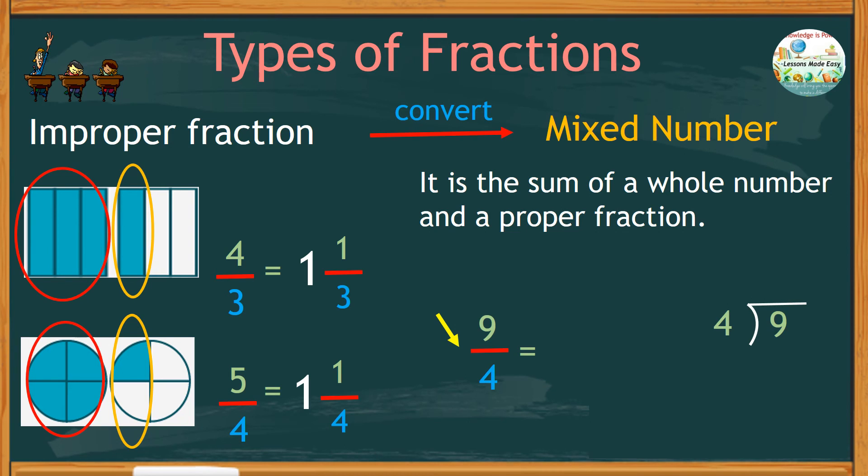How many sets of 4 can you get out of 9? Just 2. But when you multiply this by 4, we only used up 8. That means we still have 1 left. So we now have a whole number, which is 2, plus a remainder of 1 over 4.